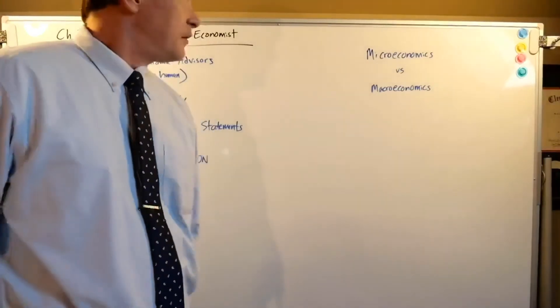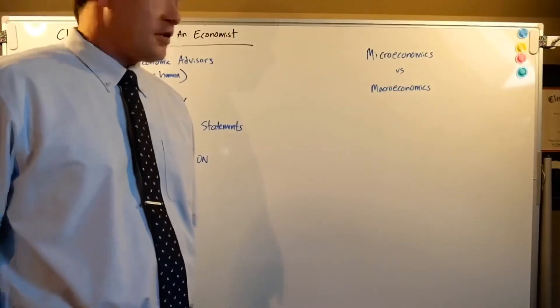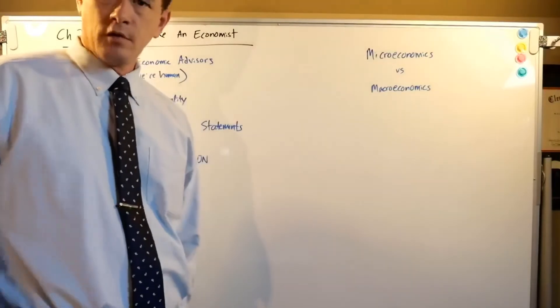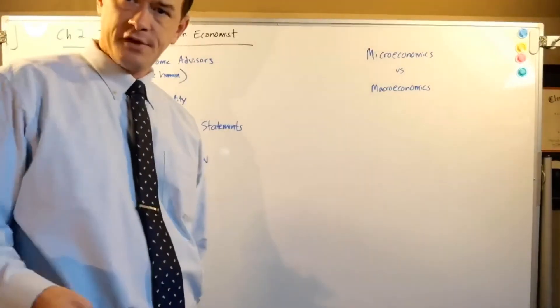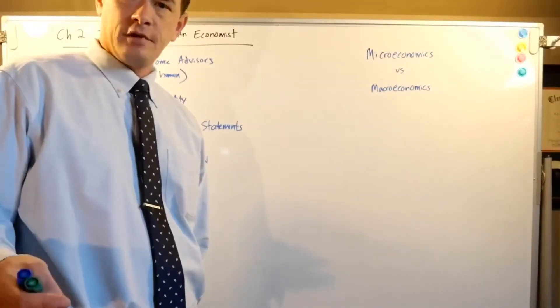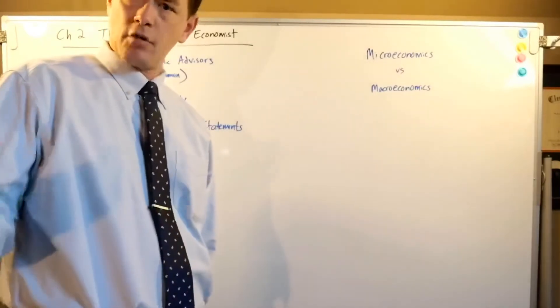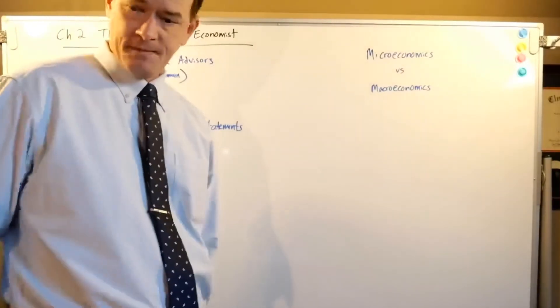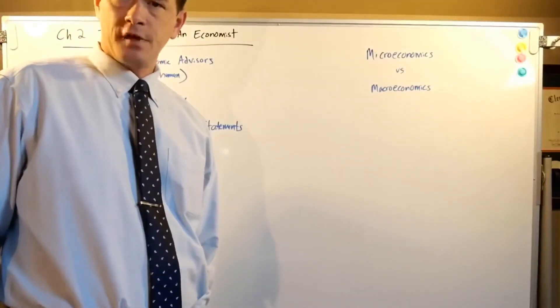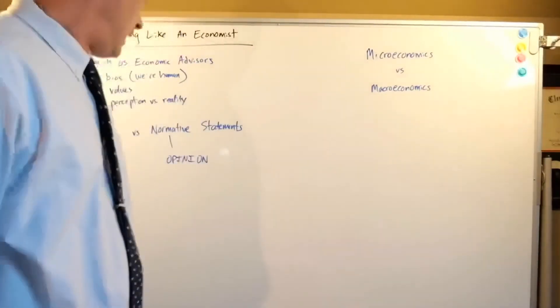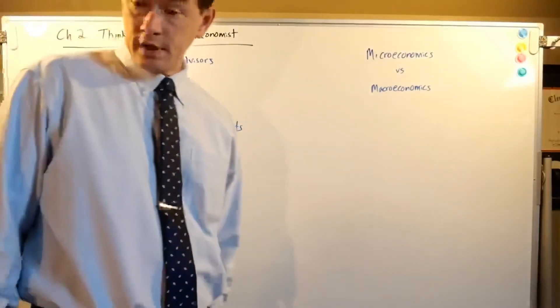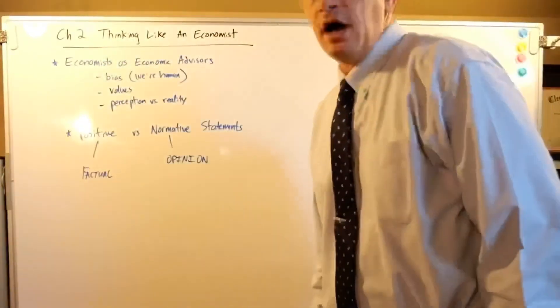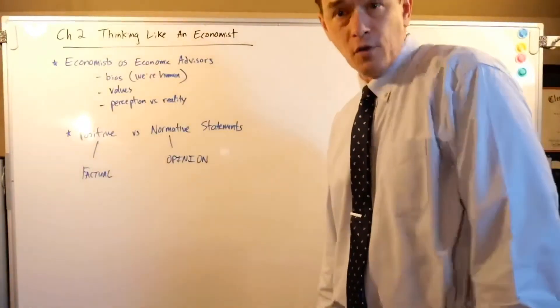All right, so as you progress in economics and hopefully you'll take microeconomics as well, we're going to look at a micro level - individual decisions. But in this class we're looking at it at a macro level, which is a broad-based look at the entire economy. And with that, that wraps up Chapter 2. Again, these videos do not replace the reading. There's so much more material and minutia in between. Make sure you're doing that and getting started on your homework.